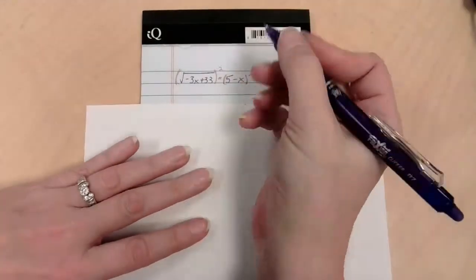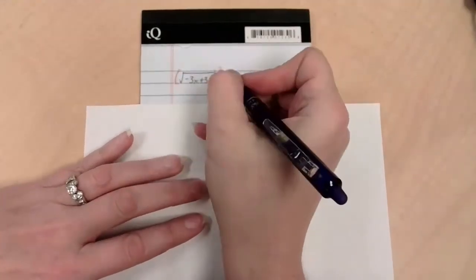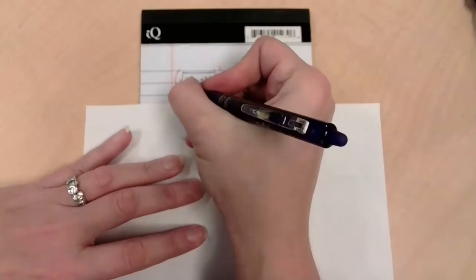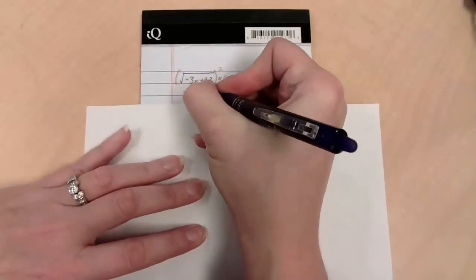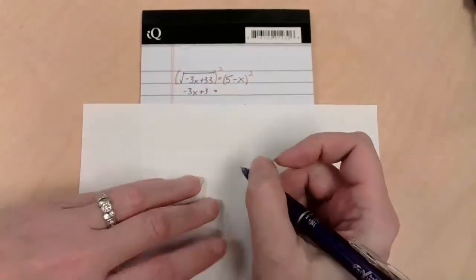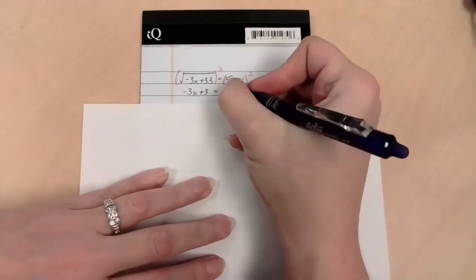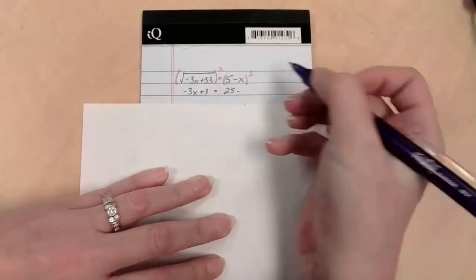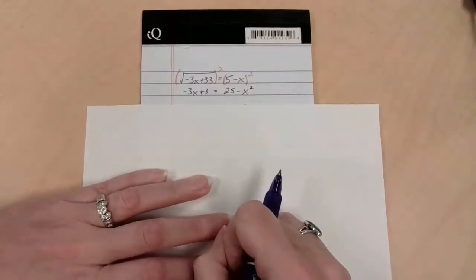All right. So what's going to happen on the left? Let's see. The square and the square root are inverses. They will undo each other, leaving me with a negative 3x plus 33. And on the right side, well, let's see, 5 squared is 25 minus x squared is x squared. There we go. You wrote that down, didn't you?